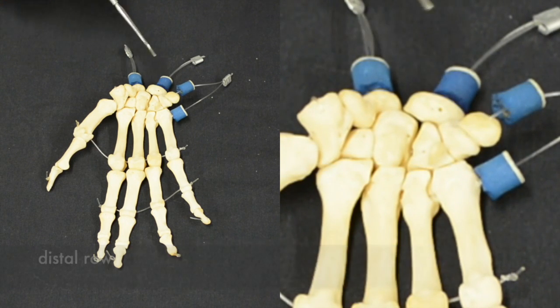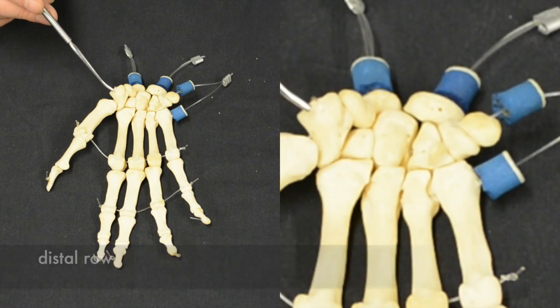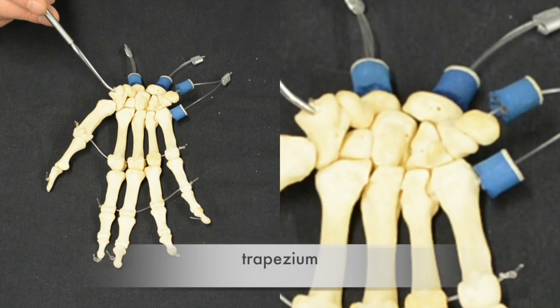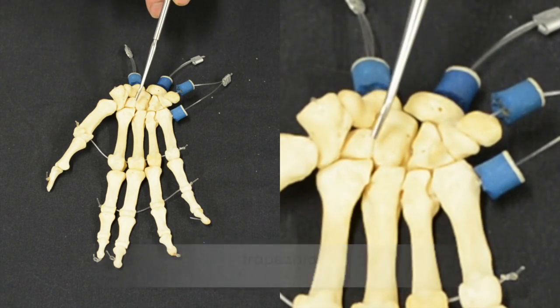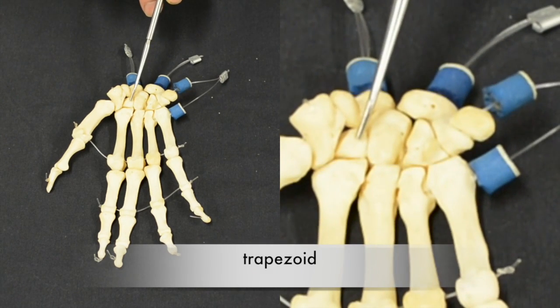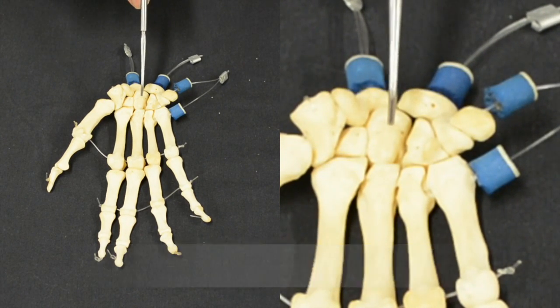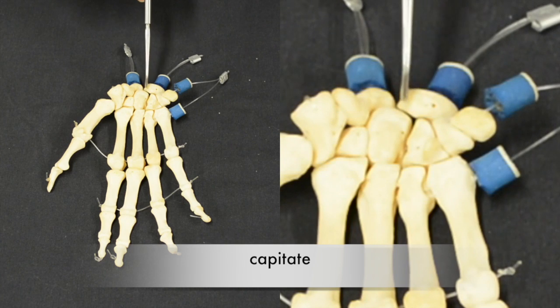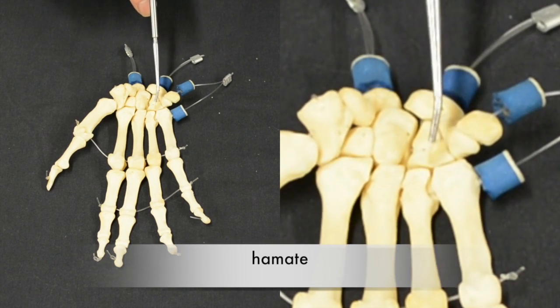In the distal row we have the trapezium, the trapezoid, the capitate, and the hamate.